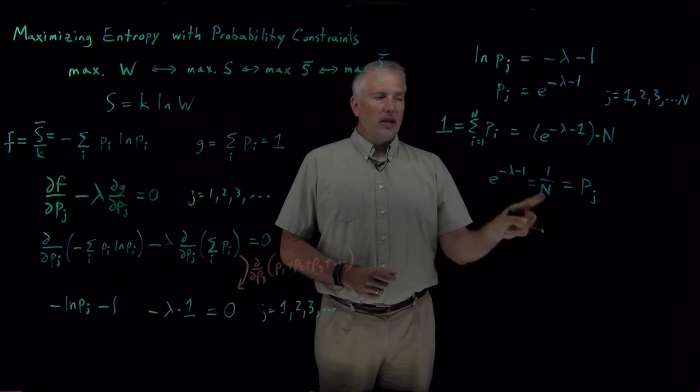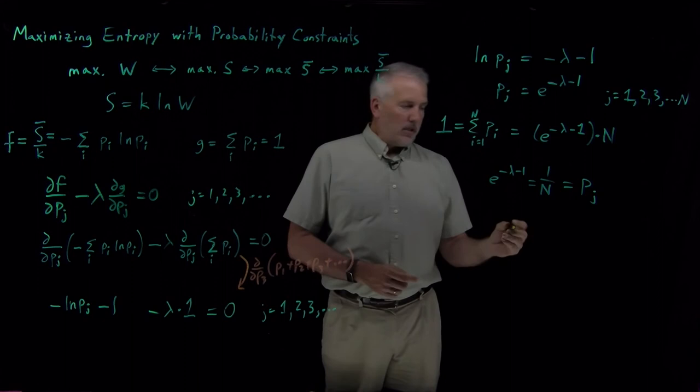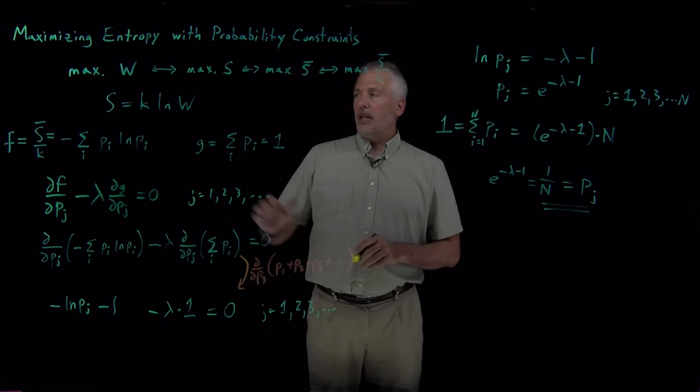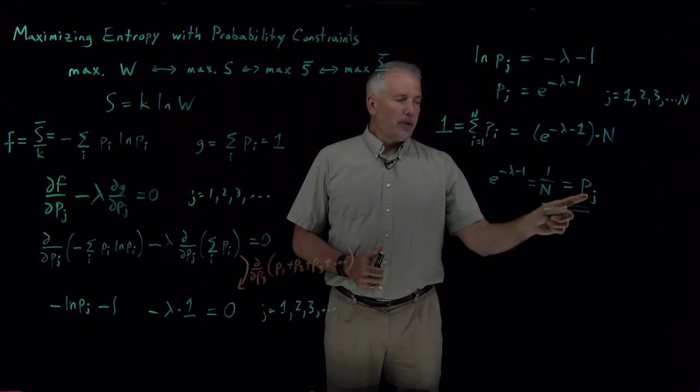When I add them up, 1 over N, N different times, that gives me 100%. So this is the answer to the question, how do I maximize the entropy? What is the most likely outcome if I have a bunch of different states? The one that maximizes the entropy is if every state has the same probability, N states each with probability 1 over N.